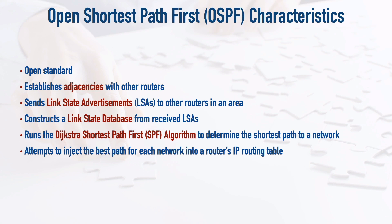Just because OSPF has a route to a network does not mean that OSPF-learned route will necessarily be placed into the IP routing table. We may have a routing information source that advertises that same network and is more believable than OSPF. For example, if EIGRP is advertising the very same network, our router will believe EIGRP over OSPF because EIGRP has a lower administrative distance of 90, compared to OSPF's administrative distance of 110.